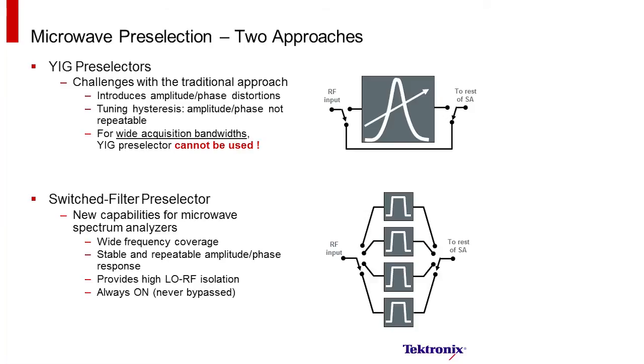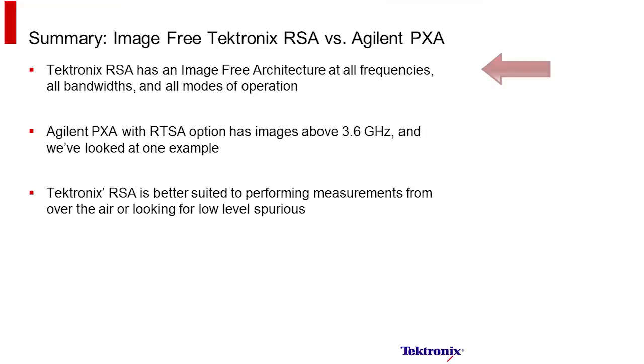The Tektronix RSA uses a switched filter preselector, which gives better capabilities when performing wideband analysis because there's no longer a concern about seeing image frequencies or image signals that aren't really present that are actually created inside the analyzer like the PXA does. With the RSA, you have a stable amplitude and phase response and better local oscillator isolation, and they're also always on, no matter the mode of operation. So Tektronix has an image-free architecture at all frequencies, all bandwidths, and all modes of operation.